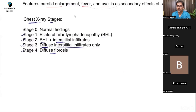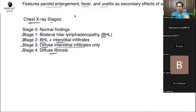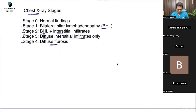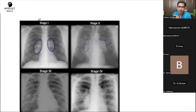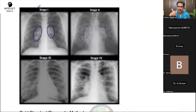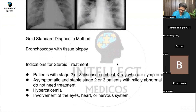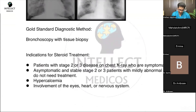Examiners just play with a few words at the end — 'initial,' 'next best,' or 'gold standard' — so be careful. Don't go with open lung biopsy; it is transbronchial biopsy. More precisely, the answer would be CT-guided transbronchial lung biopsy. The gold standard can also be described as bronchoscopy with tissue biopsy. The key point is that biopsy is the gold standard.